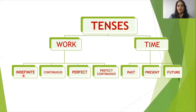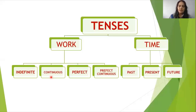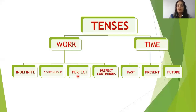The second one is continuous. Continuous means in process, going on — the work is not finished, it is still going on. The third one is perfect. Perfect means complete, finished — it means the work is done.